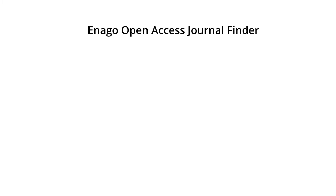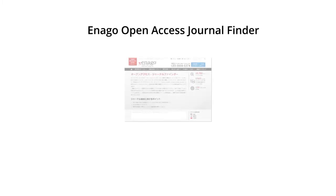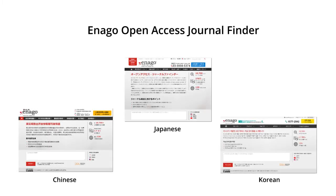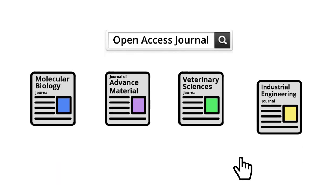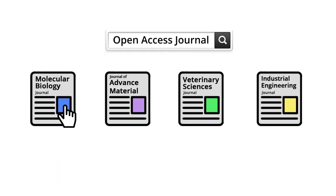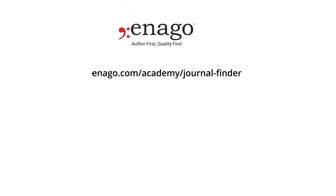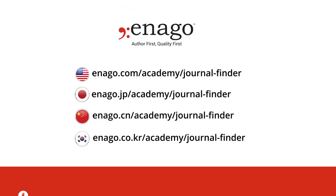The tool is also available in other languages, such as Japanese, Chinese, and Korean. Now let's begin the search for the most appropriate open access journal for your manuscript and improve your chances of successful publication.